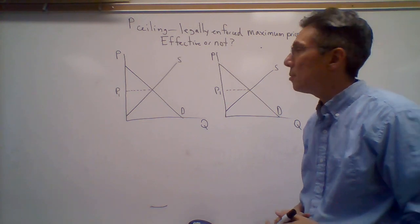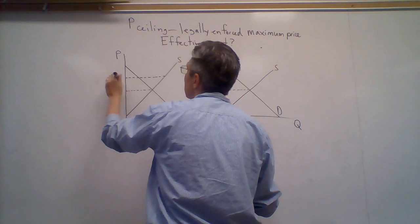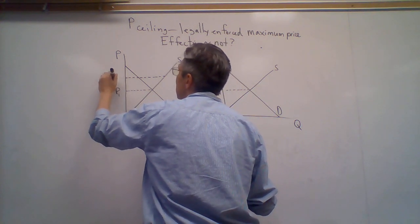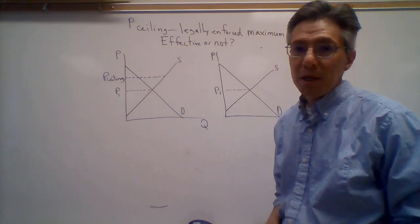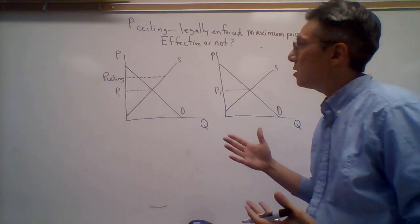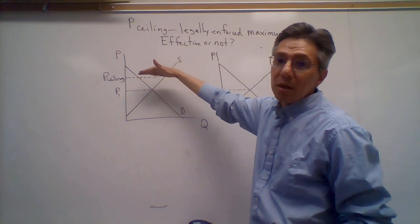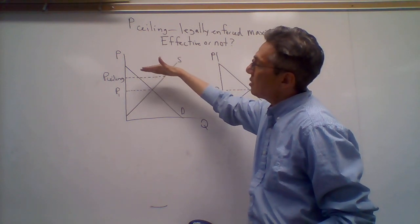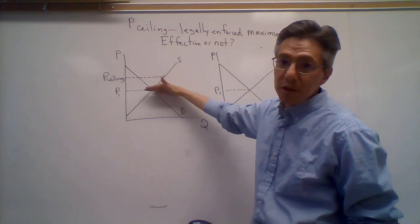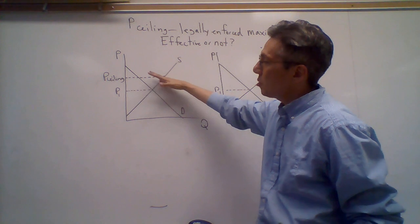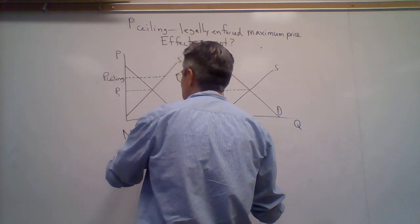So as an example, suppose the price ceiling is actually above the equilibrium price. We're basically saying you can't charge a price above this point. In this case, this does not prevent the market from reaching its equilibrium. So in terms of this price ceiling, we would say it's not effective.